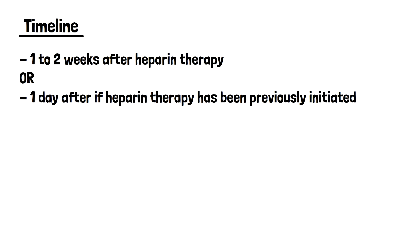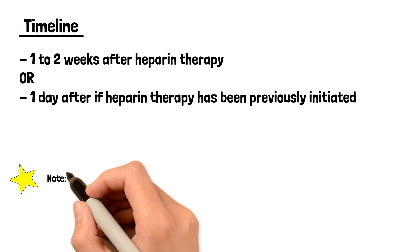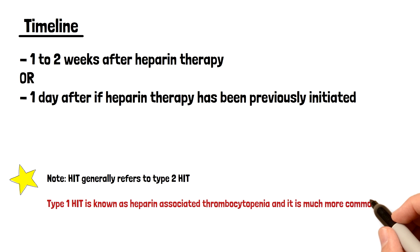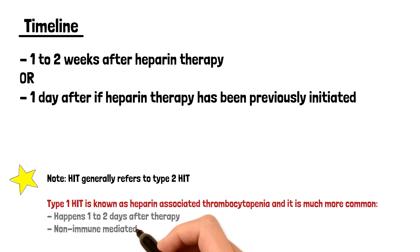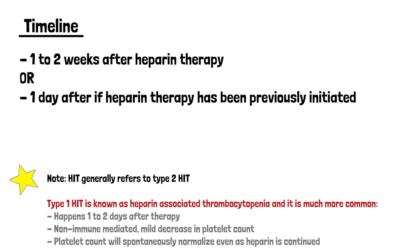One high-yield key point: HIT generally refers to type 2 HIT. We also have type 1 HIT, but that's usually called heparin-associated thrombocytopenia. It's much more common — it happens in nearly all people — and it occurs one to two days after starting heparin. It's non-immune mediated, there's just a mild decrease in platelets, and it normalizes on its own. It's transient; you don't have to stop heparin therapy. It's not an emergency.